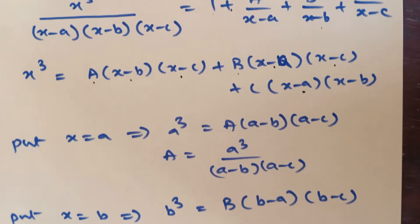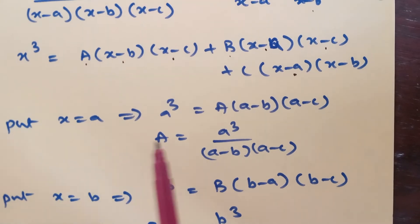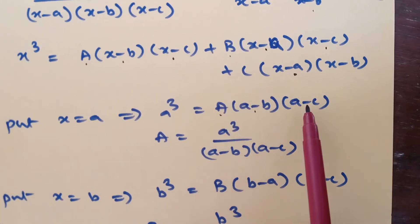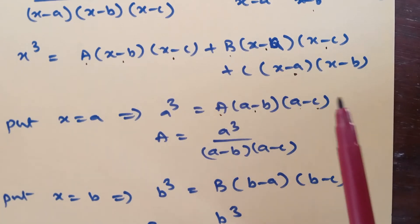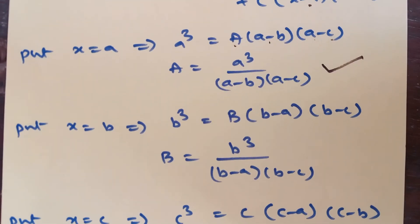Now to find A, B and C values, substitute x as a. Both sides, left side a cube, right side A of a minus b, a minus c. B and C terms become 0. Then A value is a cube by a minus b of a minus c.